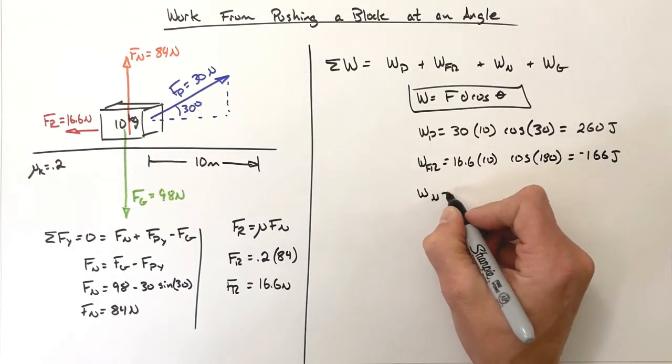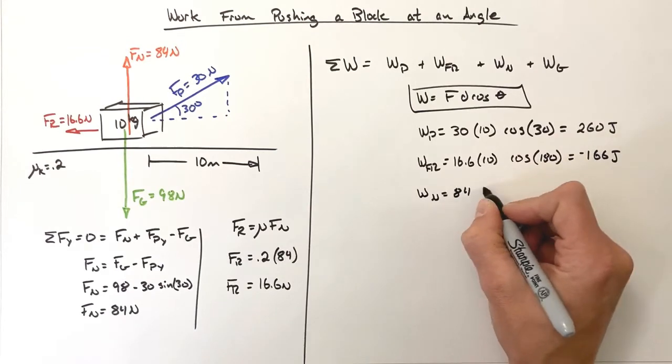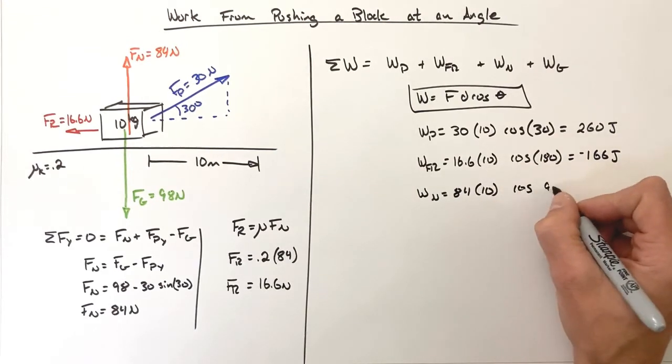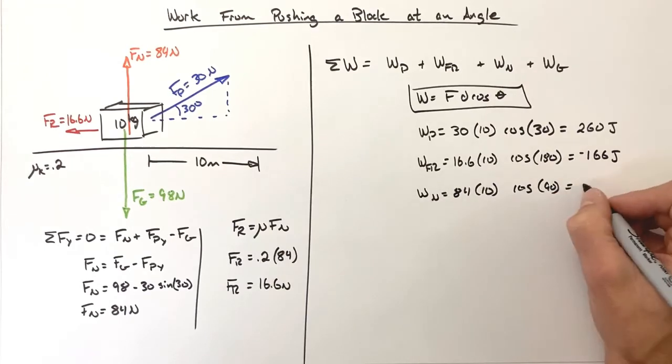Now our work by the normal force is 84 times 10 times the cosine of 90, which is going to be zero.